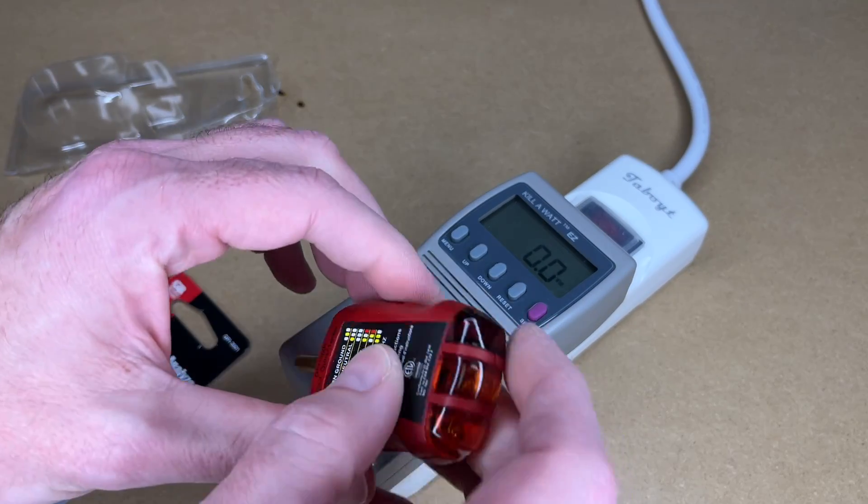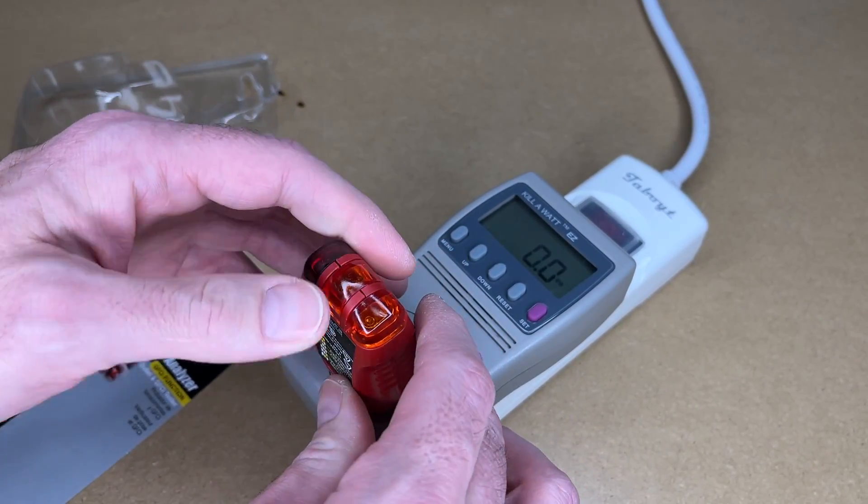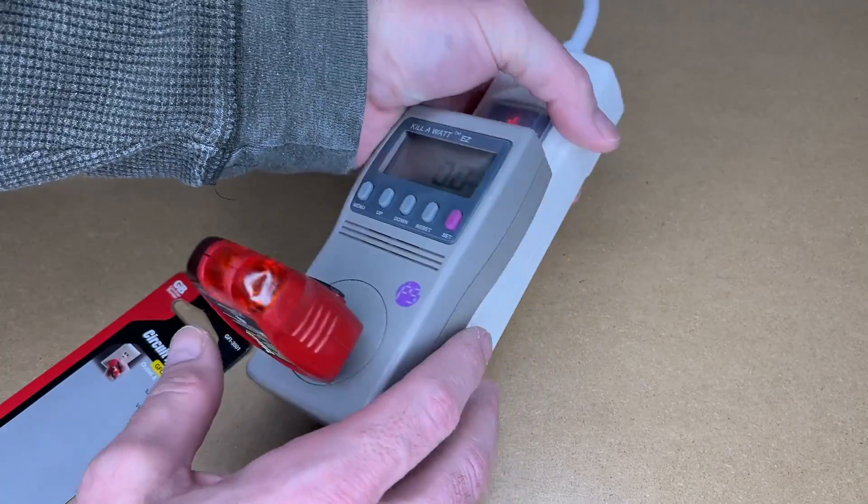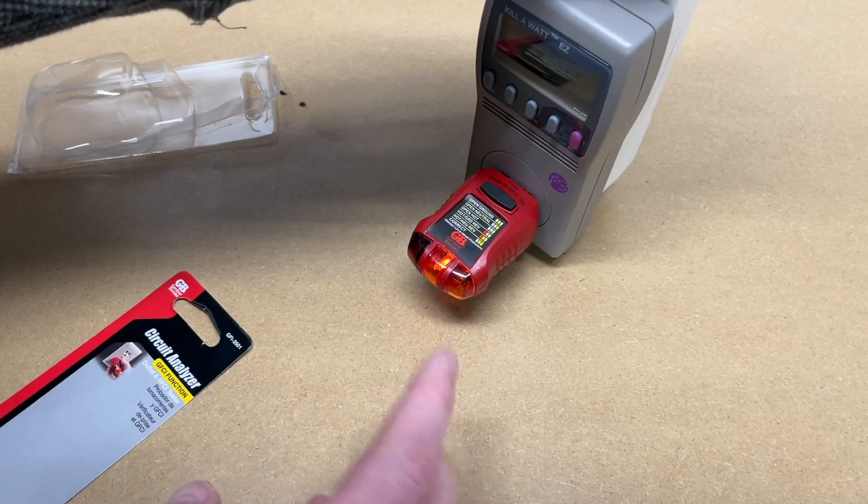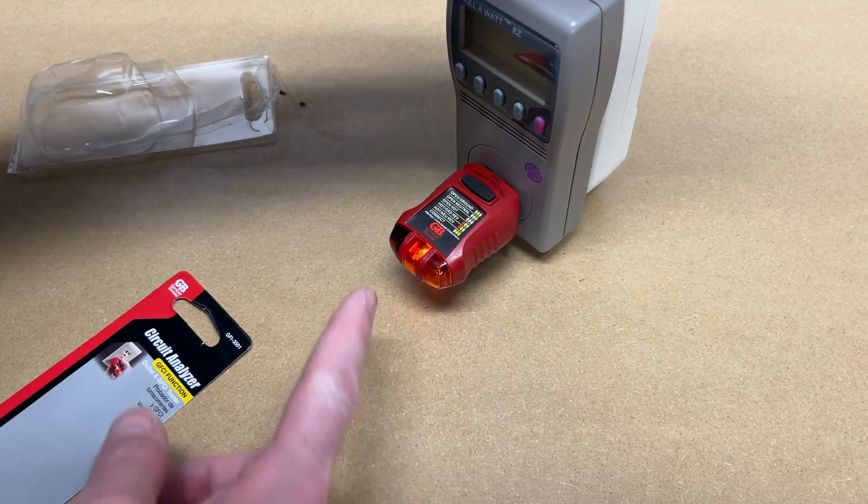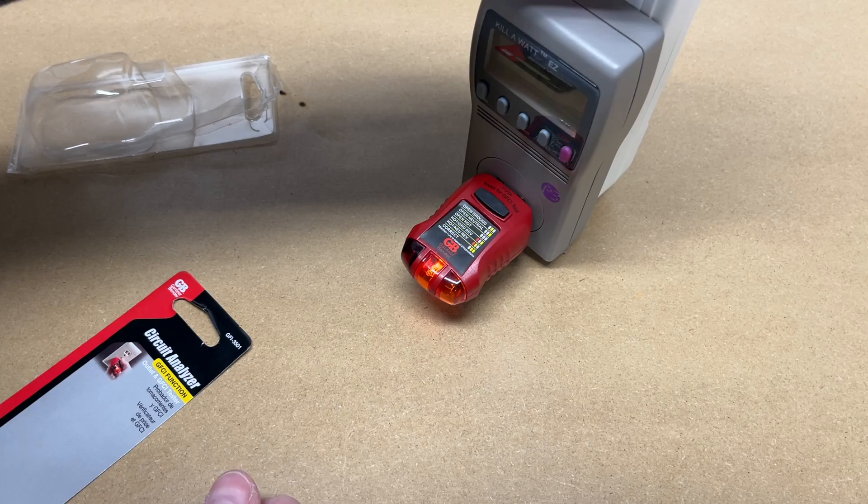Let's try it here. Here we only have the middle—it says open ground. Oh, I'm not plugged in all the way. Let me turn my light off, it's kind of bright in here. It's not super easy to see but I am able to see it. It looks like a neon tube similar to a traditional tester.